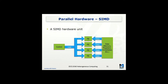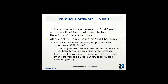In this example, we have a SIMD hardware unit with some control memory storing instructions. Each instruction can be issued to multiple processing elements, which take data inputs and perform the operation simultaneously. In the vector addition example, if we have a four-way SIMD unit, we can execute four iterations of the loop at the same time — each processing element performs the addition operation. All current GPUs are based on SIMD hardware architecture, and the GPU hardware implicitly maps each SPMD thread into a SIMD core, so the programmer does not need to consider SIMD hardware for correctness — only for performance.